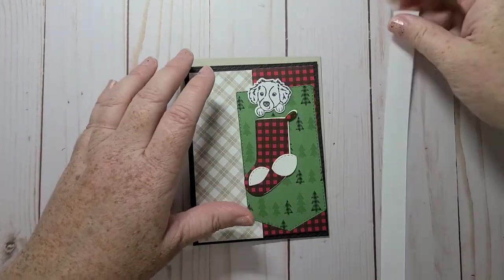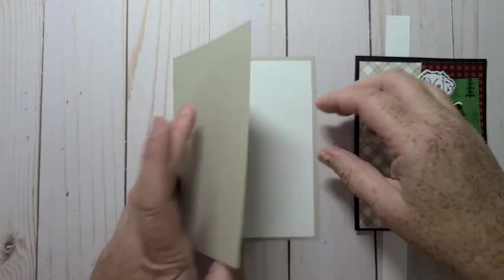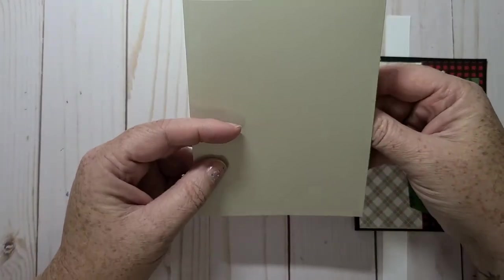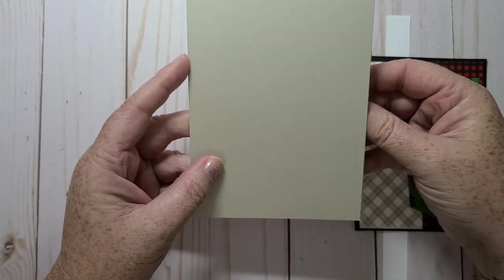So I have my pieces prepped. We're going to do a little bit of coloring. I have a Sahara Sand card base, eight and a half by five and a half, scored at four and a quarter.